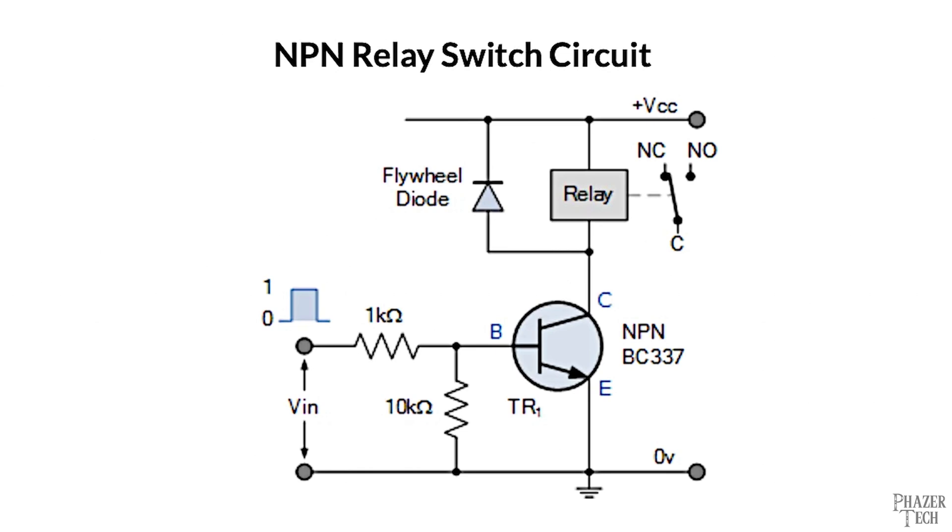Diodes are also commonly found in circuits that contain relays and motors. Both relays and motors have coils in them, and operate using electromagnetic induction. But one side effect from turning off these devices is what's known as back EMF, where the collapsing magnetic field in the coil will produce a voltage spike that can damage other components such as the transistors which power the motor or relay. Diodes can be used as protection from back EMF as well.